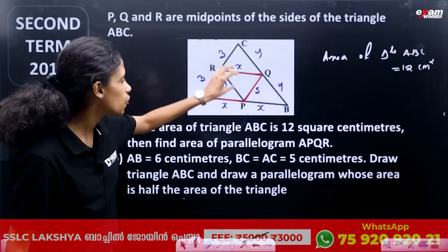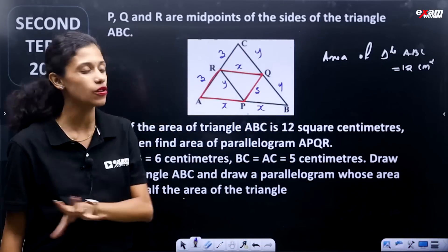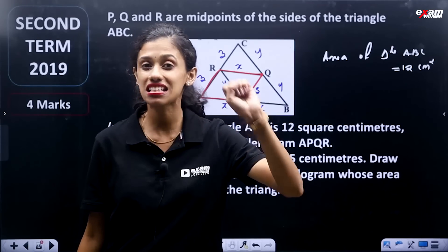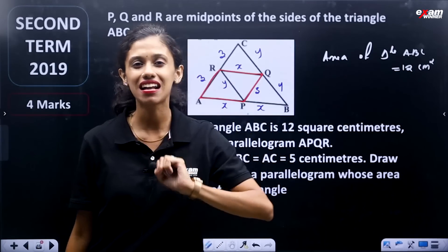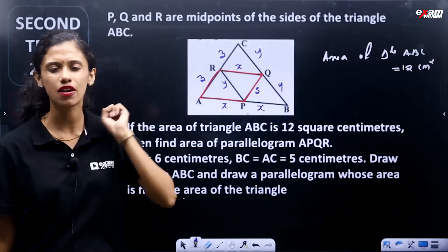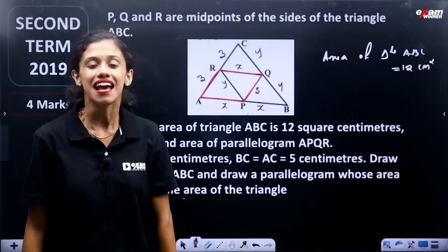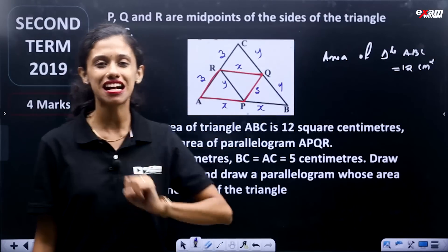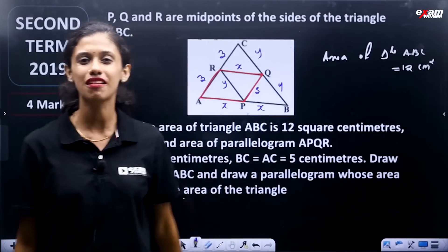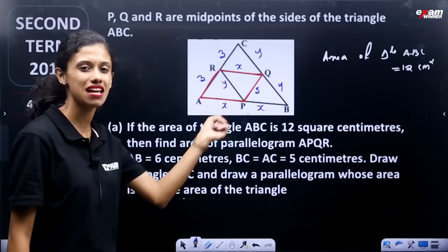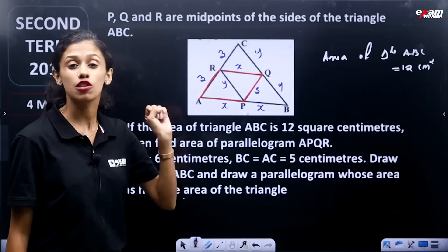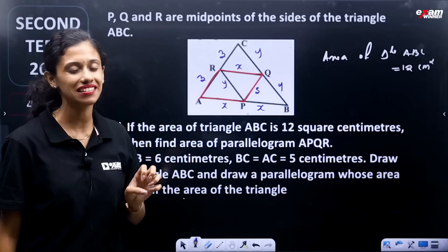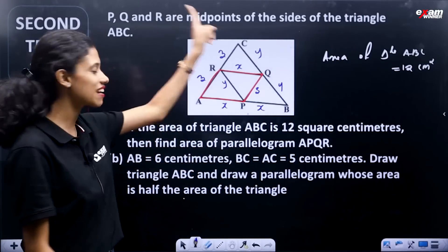Now we have 4 triangles in these 3 sides: x, y, z. They are all the same and equal. That means these 4 triangles have the same area within the area of triangle ABC.